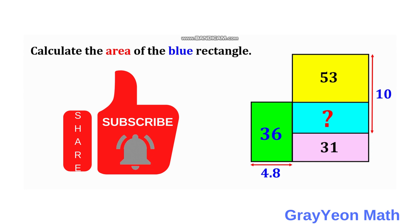And the combined height of this yellow and the blue is 10. And the length of this green rectangle is 4.8. And we are asked to calculate the area of the blue rectangle.